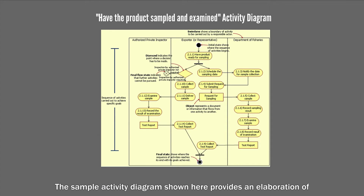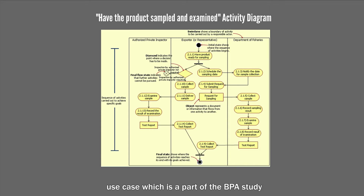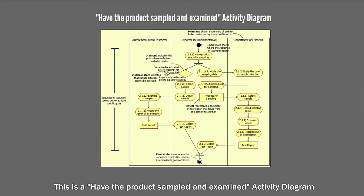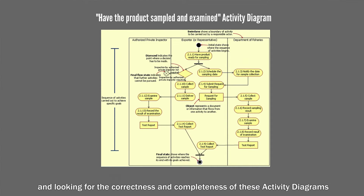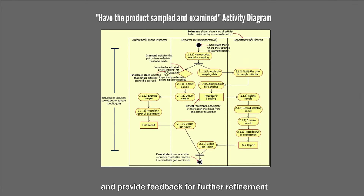The sample activity diagram shown here provides an elaboration of the 'half the product sample and examine' use case, which is part of a BPA study of shrimp exportation from Thailand. Business domain experts should help review and check for the correctness and completeness of these activity diagrams and provide feedback for further refinement. Process analysts would then revise and correct the activity diagrams according to the feedback received.